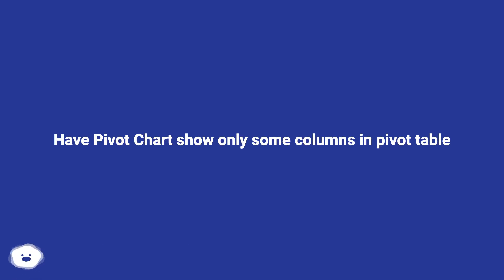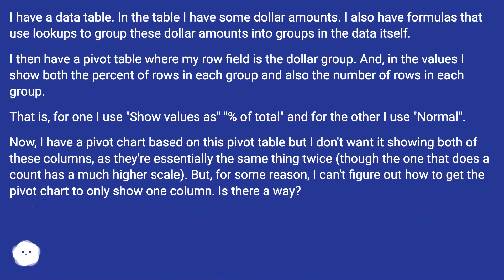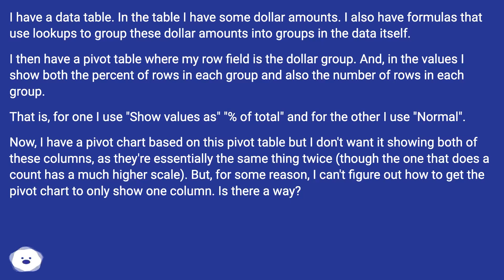How can I have a pivot chart show only some columns from a pivot table? I have a data table with dollar amounts and formulas that use lookups to group these amounts into groups. I then have a pivot table where the row field is the dollar group, and in the values I show both the percent of rows in each group and the number of rows in each group — one using 'show values as percent of total' and the other using normal count.